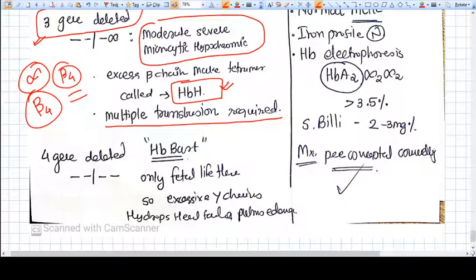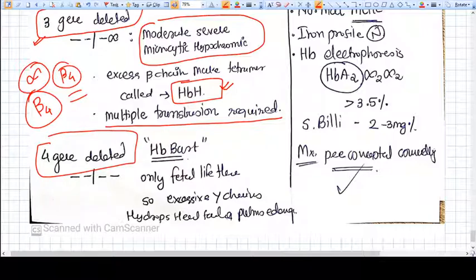If all four genes are deleted, we don't have any amount of alpha chain and normal hemoglobin will be impossible to synthesize. This deceased person is not able to survive intrauterine life. Fetal death will occur because of hydrops, heart failure, and pulmonary edema.